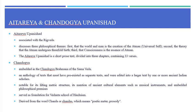The Chandogya Upanishad is a Sanskrit text embedded in the Chandogya Brahmana of the Samaveda. Like the Brihadaranyaka Upanishad, the Chandogya is an anthology of texts that must have pre-existed as separate texts and were edited into a larger text by one or more ancient scholars. It is notable for its layered matrix structure, its mention of ancient cultural elements such as musical instruments, and embedded philosophical premises that later served as the foundation of the Vedanta school of Hinduism.